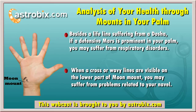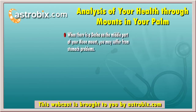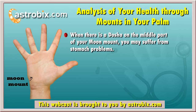If a cross or wavy lines are clearly visible on the lower part of your moon mount, you may suffer from problems related to your navel. Since your navel is connected to some other parts in your body, these problems may also affect those body parts. If there is a dosha on the middle part of your moon mount, you may suffer from stomach problems.